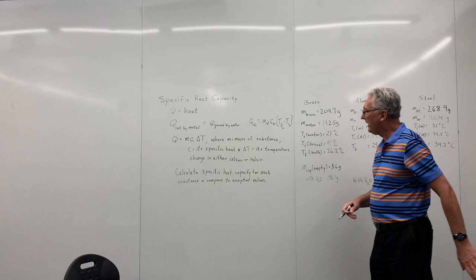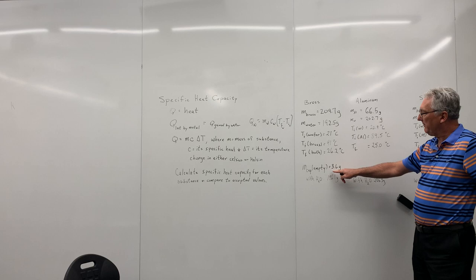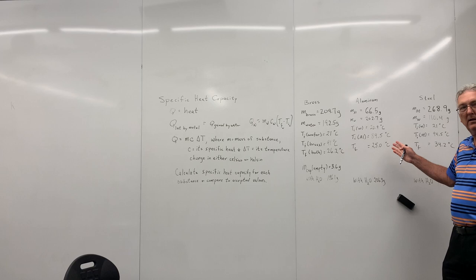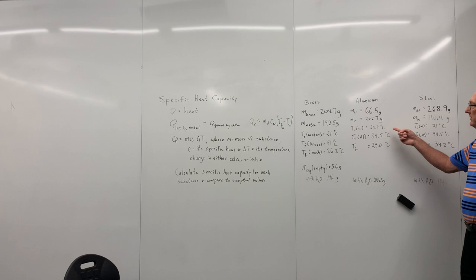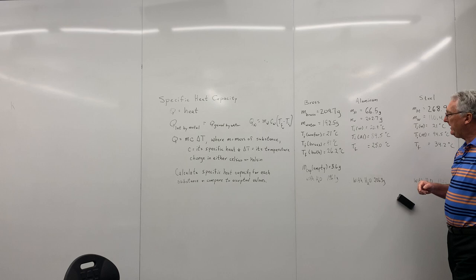All right. So the way we found the mass of the water, of course, we started with the empty cup and then this was the final mass. Okay. Is this part of the board still on them? Okay. The next one was aluminum. The aluminum was 66 and a half grams. The mass of the water for that one was 202.7 grams. The initial temperature of the water was 20.9 degrees. The initial temperature of the aluminum was 89 and a half. And then when they came to equilibrium, it was 25 degrees.